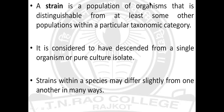The strain is the rather basic unit which defines the species of an organism. A strain is a population of organisms distinguishable from at least some other populations within a particular taxonomic category — a strain should have certain phenotypic characters distinguishable from other strains of different species. It is considered to have descended from a single organism or pure culture isolate; cells multiply from a single microbial cell and those cells are called a single strain.